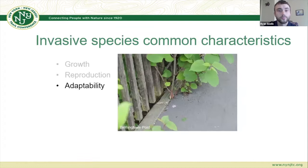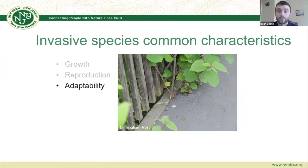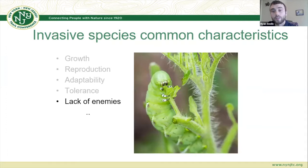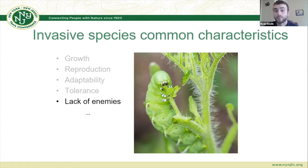Invasive species are also very adaptable. Here is a picture of Japanese knotweed growing right through concrete — it can grow under quite a lot of different conditions. Invasive species are also more tolerant to stressors like pollution, salt, drought, flooding, and other disturbances. They also lack natural enemies, which ties back to the co-evolution of ecosystem organisms and plants taking a long time to develop the traits needed to overcome chemical defenses.